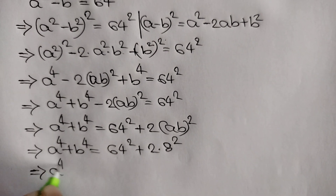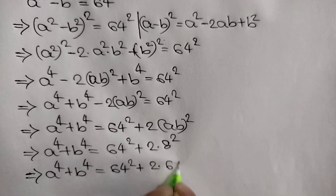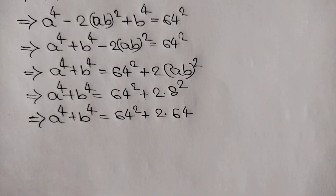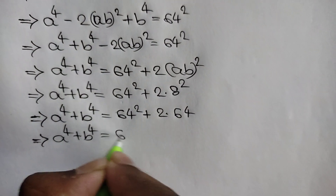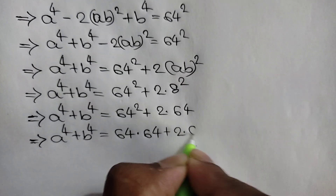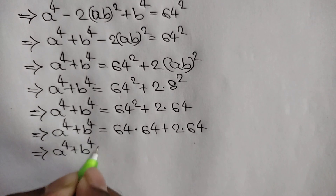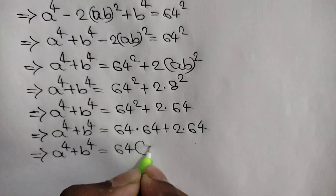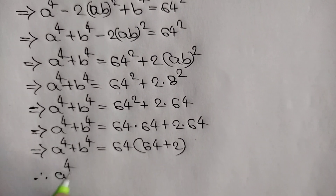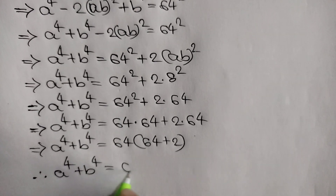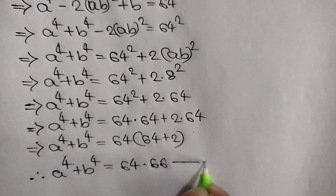So a to the power 4 plus b to the power 4 is equal to 64 squared plus 2 times ab whole squared. That means 64 times 64 plus 2 times 64, which gives us a to the power 4 plus b to the power 4 is equal to 64 times 66. This is equation number 3.